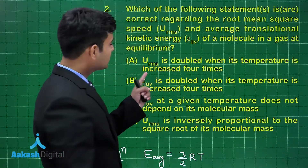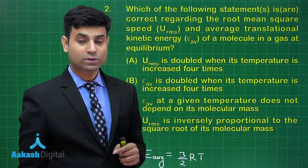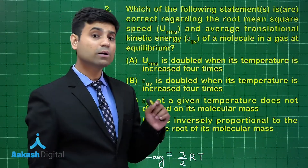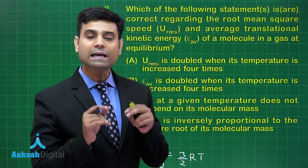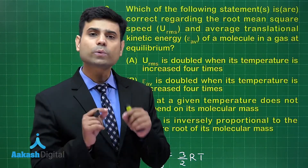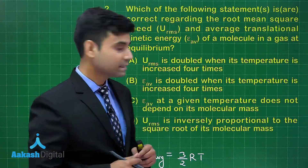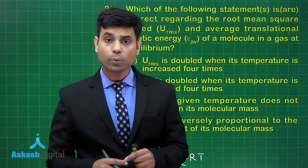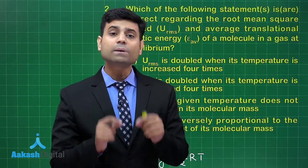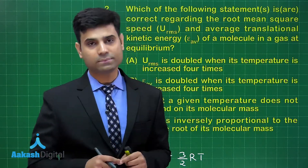Option A: URMS is doubled when its temperature is increased four times. URMS is directly proportional to the square root of T. Hence URMS will be doubled when the temperature becomes four times. So option A is correct.